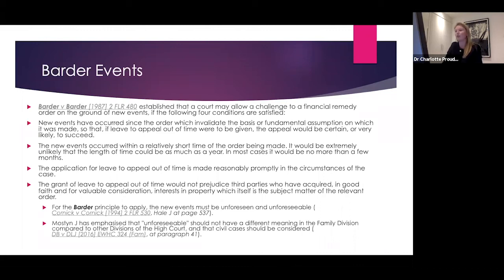Effectively, had the 21 days for appeal not elapsed, one could have appealed successfully. But because that period has elapsed, one can look at a Barder situation, providing it relates to new events invalidating the assumptions of the order. Second, the new events occurred within a relatively short time of the order being made — it would be extremely unlikely if the length of time were as much as a year; in most cases it'll be nothing more than a few months. Third, the application for leave to appeal out of time is made reasonably promptly. Fourth, granting leave to appeal out of time would not prejudice third parties who have acquired in good faith, for valuable consideration, any interest in the property which was the subject of the final order.